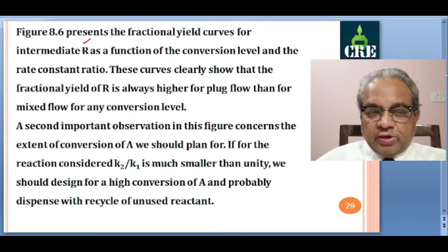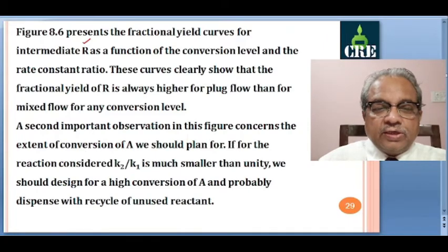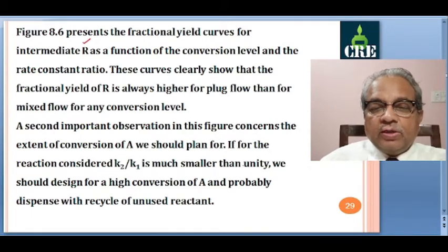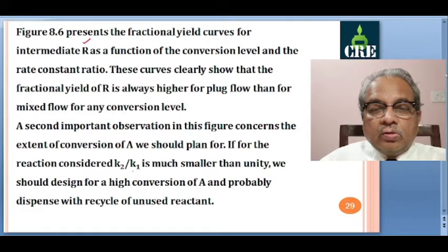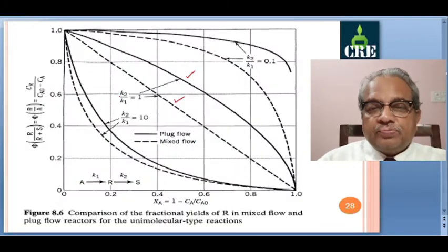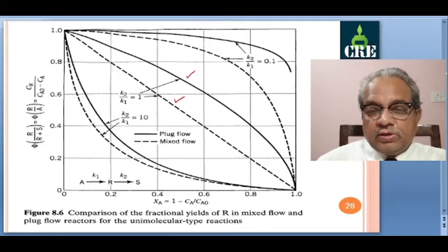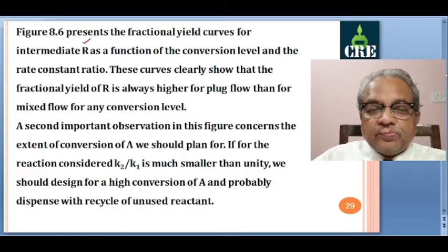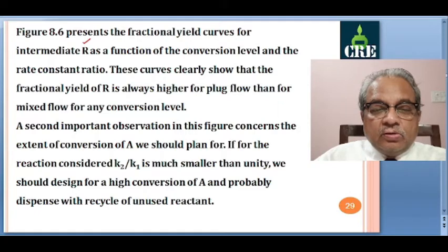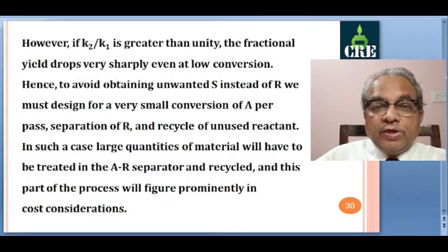The second important observation concerns the extent of conversion we should plan for. If K2/K1 is much smaller than unity — say 0.1 — we get maximum yield in the region of low conversion, then it drops. So we should design for a high conversion of A and probably dispense with recycle of unused reactant. If K2/K1 is greater than unity, the curves are below the diagonal and the fractional yield drops very sharply even at low conversions.